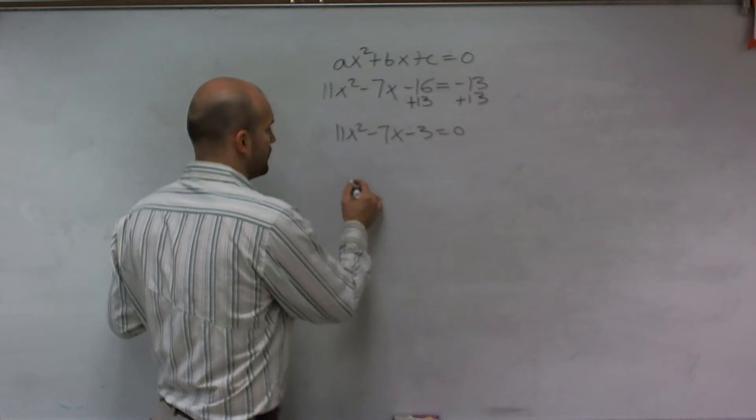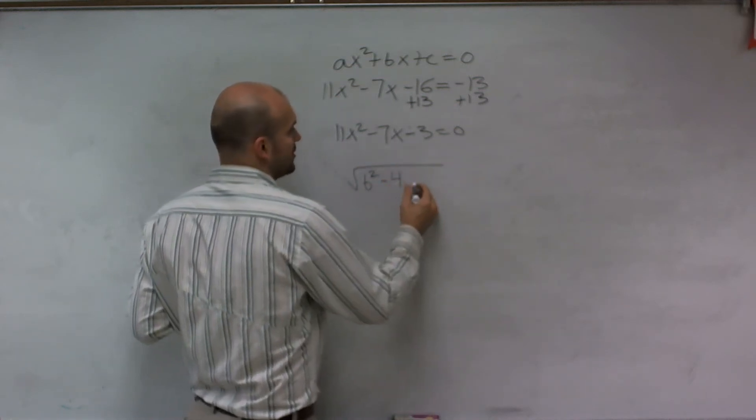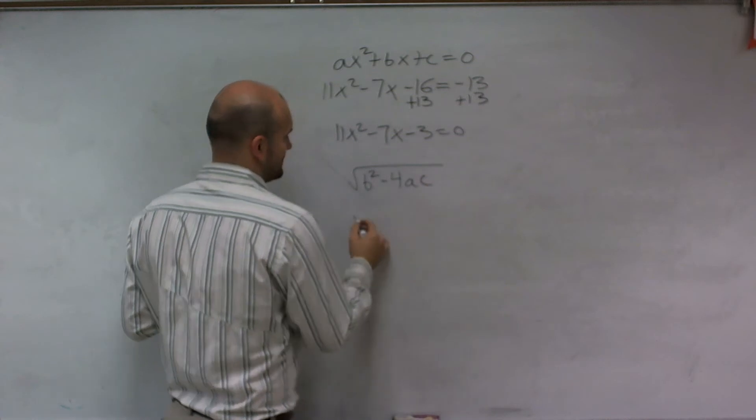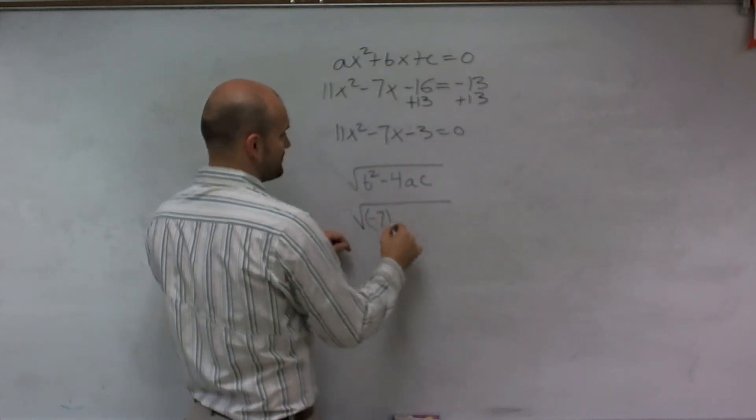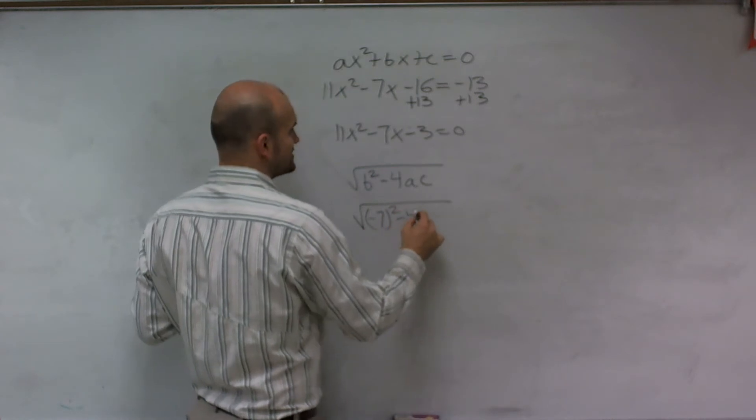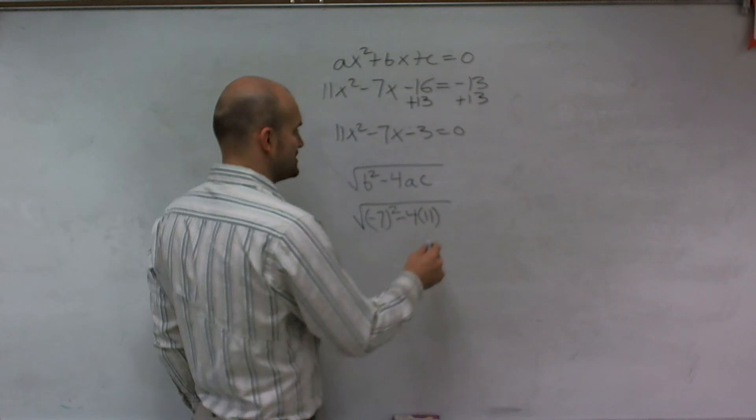So let's just remember, what are we going to take? What is under the square root? Well, it's b squared minus 4 times a times c. And in this problem, my b is going to be negative 7 minus 4 times a, which is 11, times c, which is negative 3.